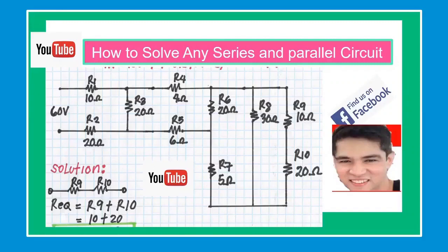Our topic is how to solve series and parallel circuits. We'll discuss the difference between series and parallel circuits using resistors and batteries. In a series circuit, the current through each component is the same, and the voltage across the circuit is the sum of individual voltage drops across each component.